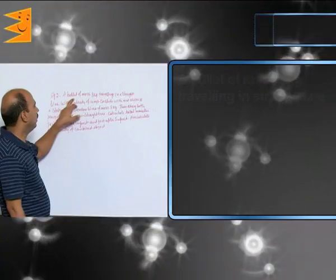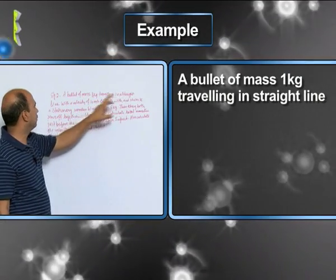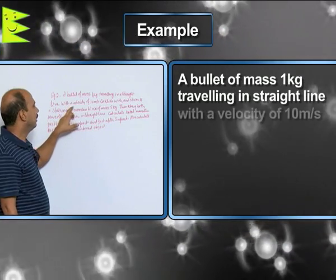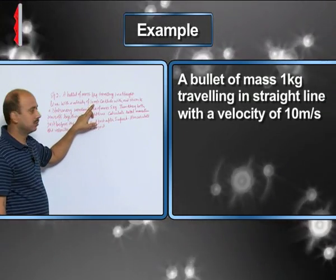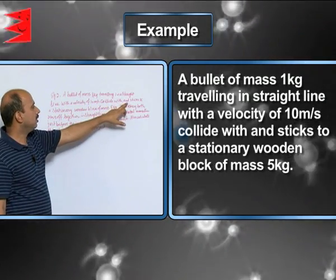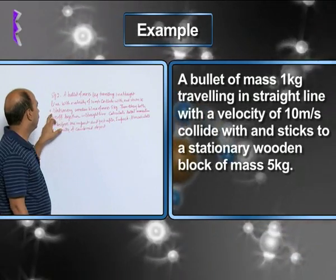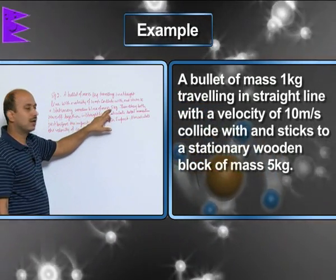Now, see in this example, a bullet of mass 1 kg traveling in a straight line with a velocity of 10 meters per second